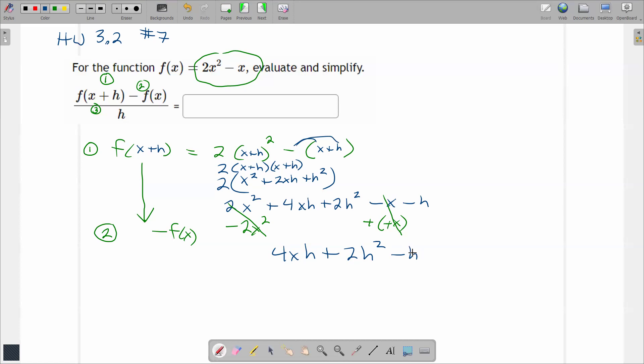So what's left from step 2 is 4xh plus 2h squared minus h. Can I do anything to that before I move on? You can factor h out. Let's do it. 4x plus 2h minus 1 times h. And now I'm ready for step 3. Step 3 is to take whatever I found above here and divide it by h. So I'm just going to go over here and write divide by h. What's left for part 3 is 4x plus 2h minus 1.